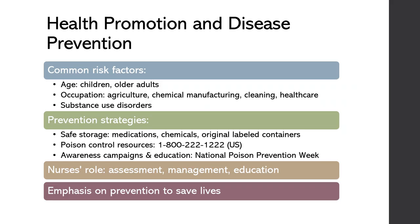Let's look further into health promotion and disease prevention when it comes to poisonings. Let's examine common risk factors. Children, especially toddlers, are at higher risk for accidental ingestion of toxic substances due to their curiosity, limited understanding of danger, and tendency to put objects in their mouths. Older adults may also be at risk due to cognitive decline, poor vision, and difficulties managing medications.